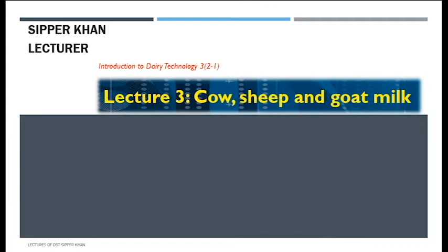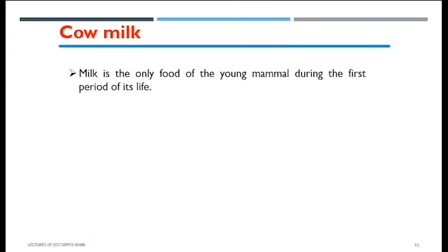Assalamu alaikum everyone, welcome to lecture number three of Introduction to Dairy Technology. This lecture will be focused on cow, sheep, and goat milk — the terms normally used inside these production mechanisms and a comparison of how the milking mechanism works. Milk is the primary source of food for young mammals during the initial period of their life. It is not only a source of energy but is also rich with the building materials needed for their growth.